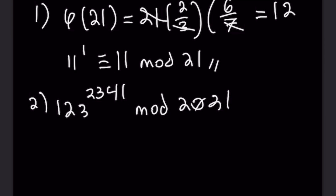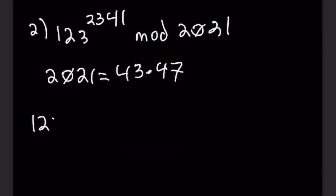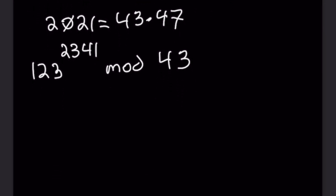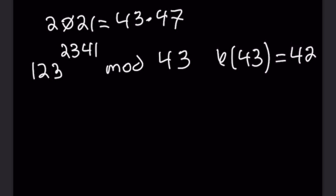So 2021 = 43 × 47. We'll split this into 123^2341 mod 43 and handle that first. As a general rule, we reduce the base mod 43 and the exponent mod φ(43). Since 43 is prime, φ(43) = 42. For the base: 43 × 3 = 129, so 123 ≡ −6 (mod 43). That gives us (−6)^2341 mod 43.